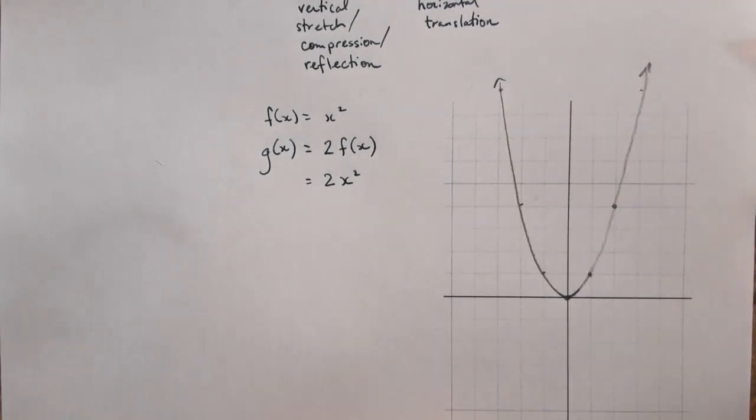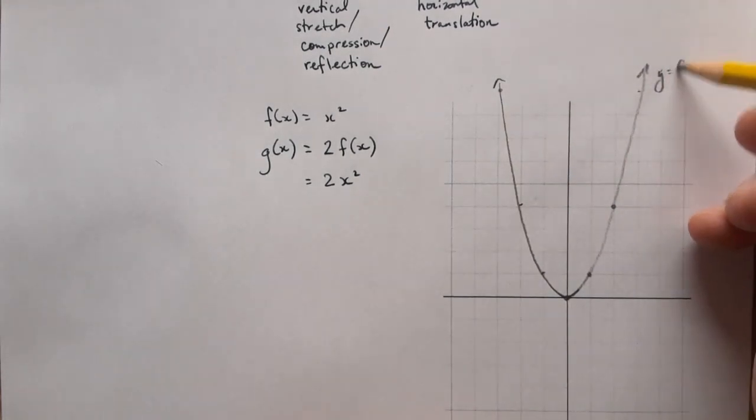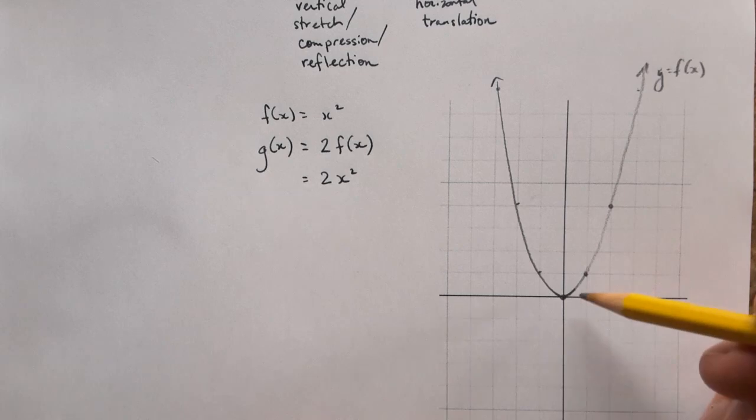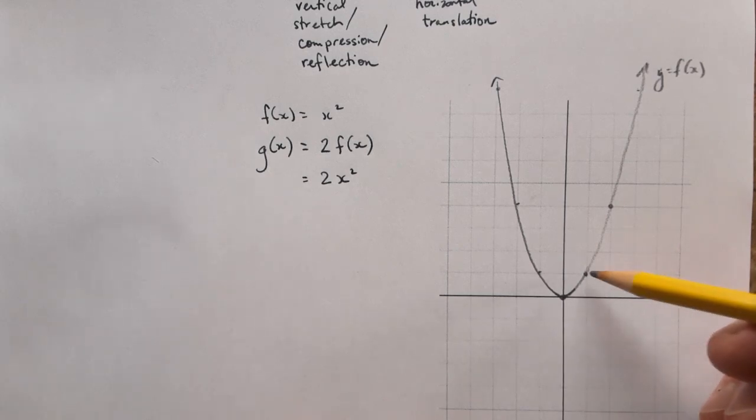Let me just sketch that out. Okay, and that's my y equals f of x graph. And to draw the graph of g of x, that's two times the graph of f of x. Every point is multiplied by two. So the y value that is.